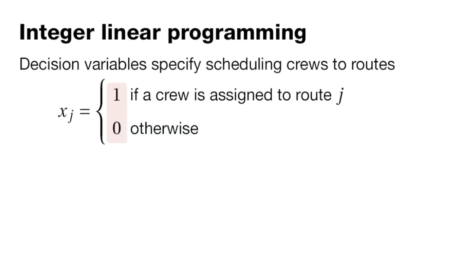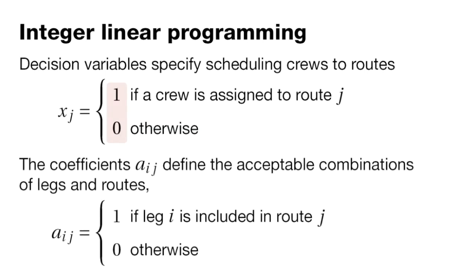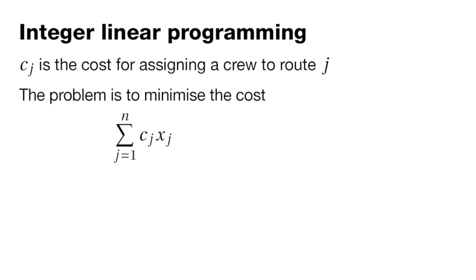In integer linear programming, binary or decision variables are often used. These variables take values of 1 or 0. In a lot of problems the variables are integers — specifically 0 or 1. Should a certain connection be turned on or off? Should a particular crew member travel on this arc or not? It's a decision that you can turn on or off.